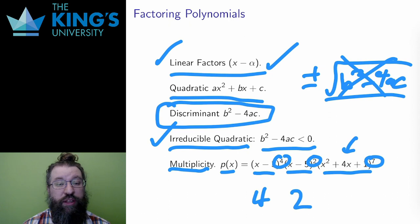These exponents are called the multiplicity of the factor. The linear factor x minus 3 has multiplicity 4, the linear factor x minus 5 has multiplicity 2, and the irreducible quadratic factor has multiplicity 7. When I factor a polynomial, I must also include multiplicity of the factors to get a complete picture.